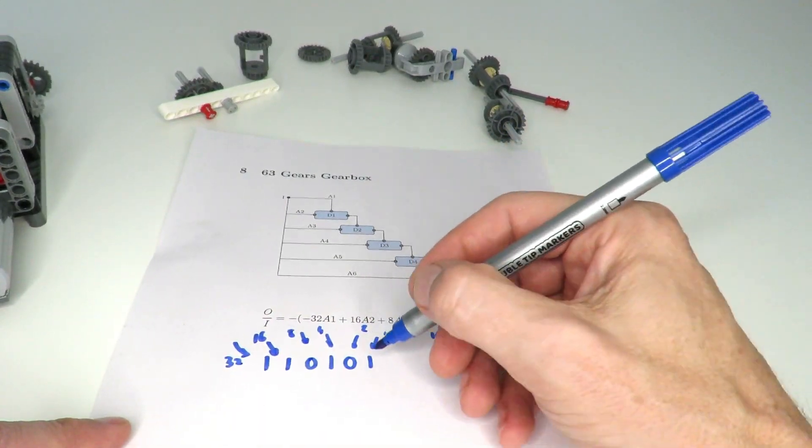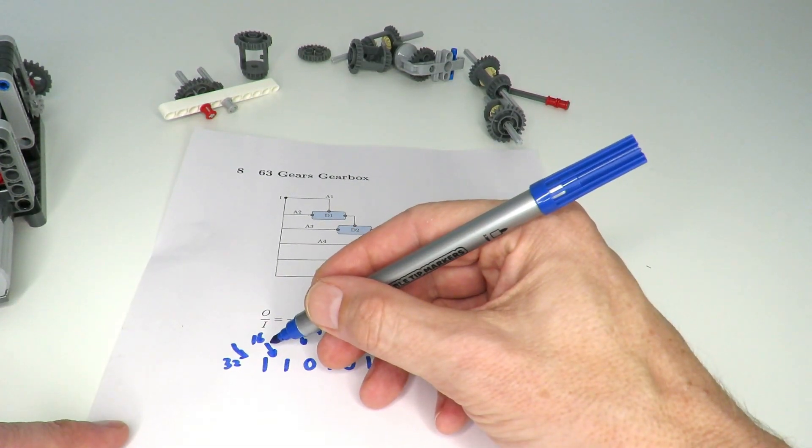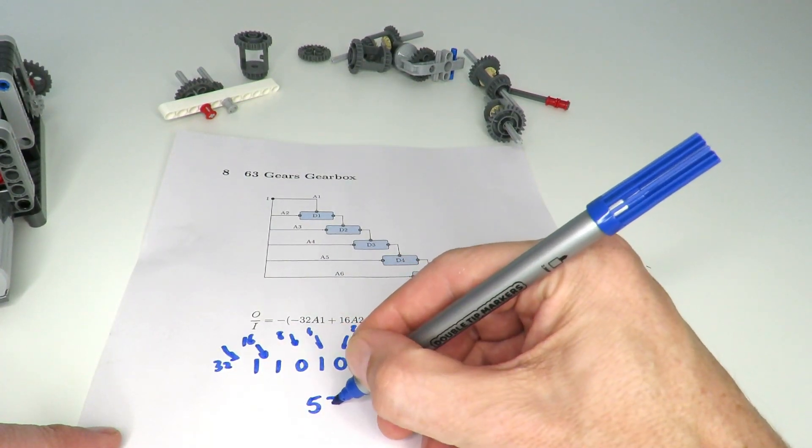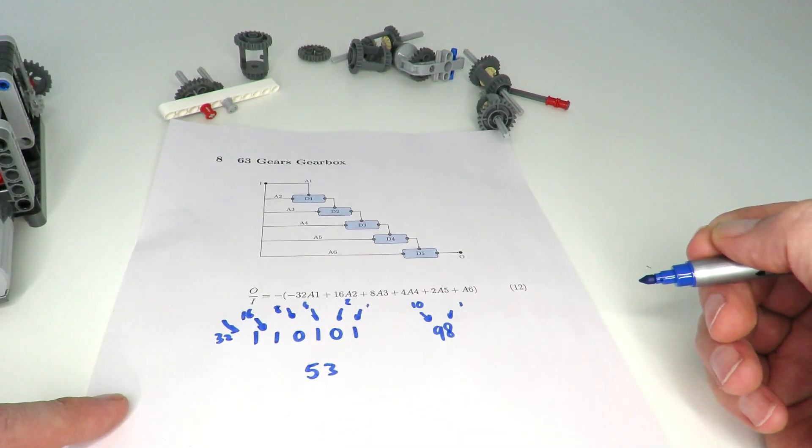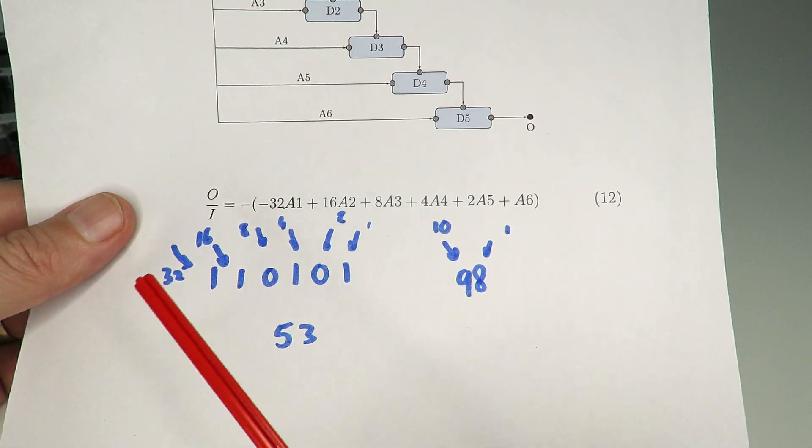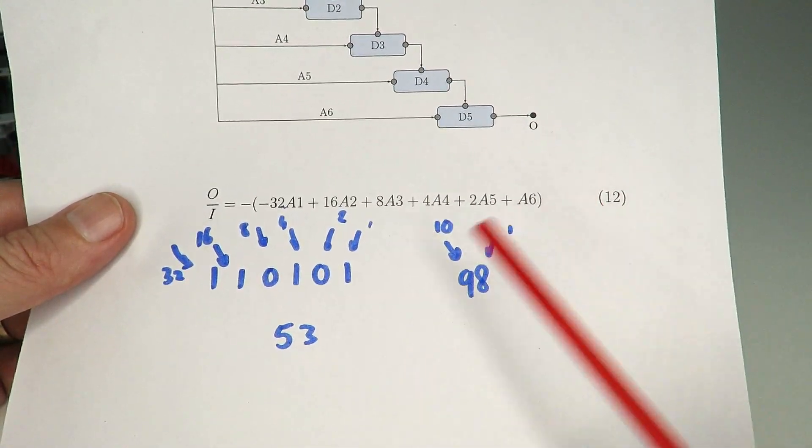So in case of a binary number, this one here would be 1 plus 4 is 5, plus 16 is 21, plus 32 is 53. So this is the binary equivalent of the number 53. So by comparing the representation of a binary number compared to the equation for the output to input, we can see the parallel.